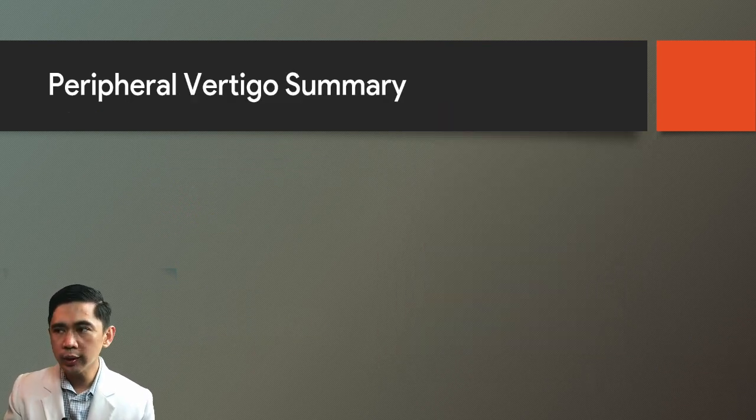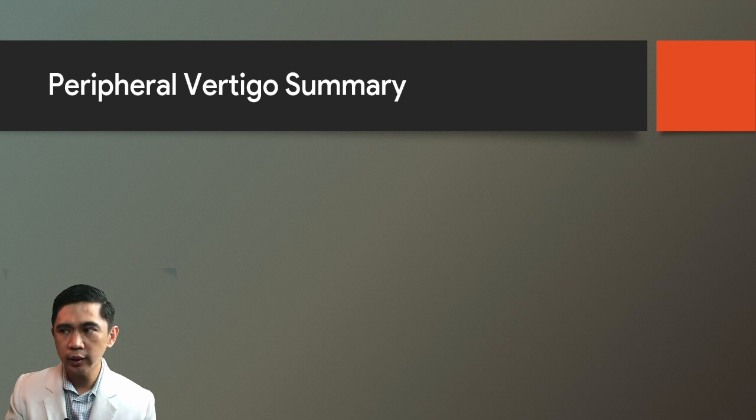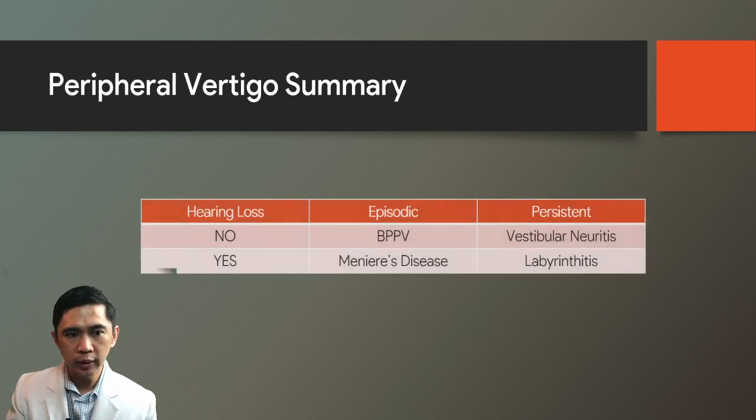To summarize the most common vertigo entities, a comparison table can be constructed with columns for hearing loss and other features, allowing differentiation of BPPV, Meniere's disease, vestibular neuronitis, and labyrinthitis.